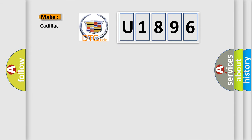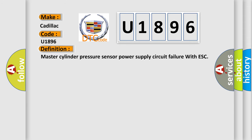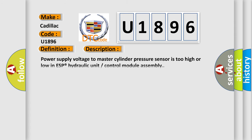The number itself does not make sense to us if we cannot assign information about what it actually expresses. So, what does the diagnostic trouble code U1896 interpret specifically for Cadillac car manufacturers? The basic definition is: Master cylinder pressure sensor power supply circuit failure with ESC. Power supply voltage to the master cylinder pressure sensor is too high or low in the ESP hydraulic unit control module assembly.